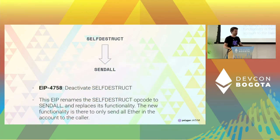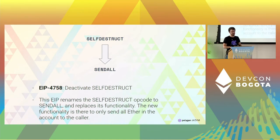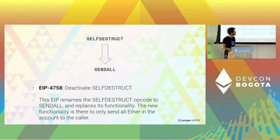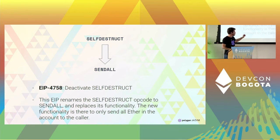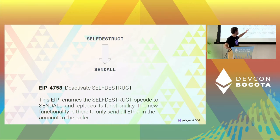We don't use self-destruct. This is a difference now, but we expect it won't be a difference in the near future because Ethereum will probably accept EIP 4758, which replaces self-destruct with SENDALL. So we are not using self-destruct from the very beginning. We're using SENDALL, and I'm happy about it because self-destruct creates a lot of problems. Instead of removing the bytecode and storage of an account when you call self-destruct, SENDALL empties the account and sends all the balance to the account caller.